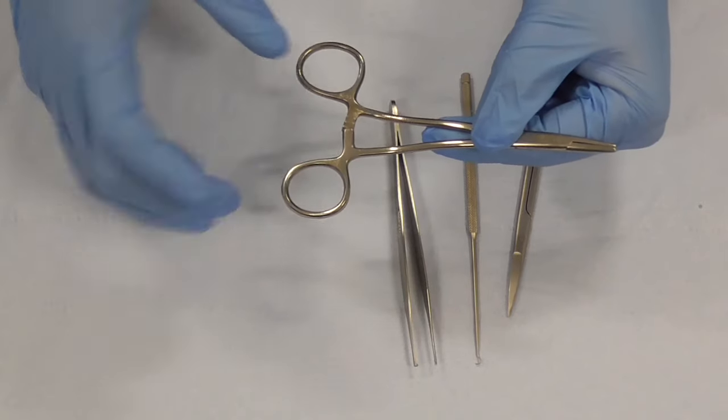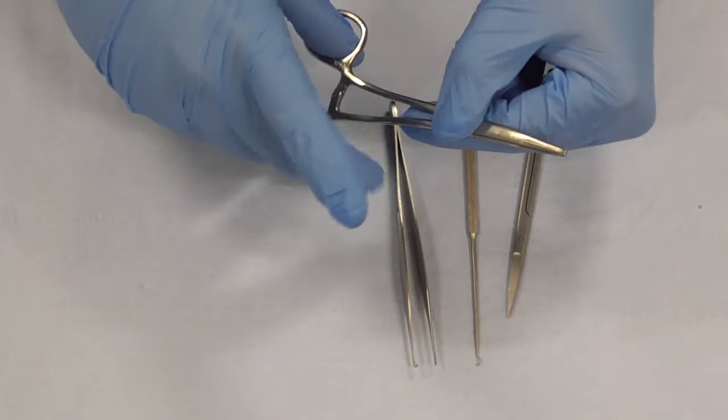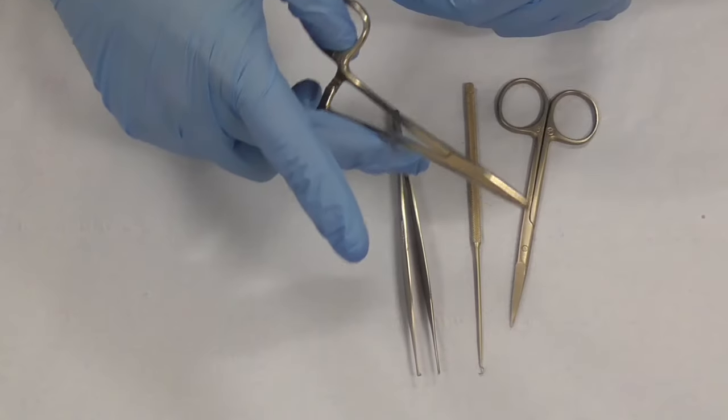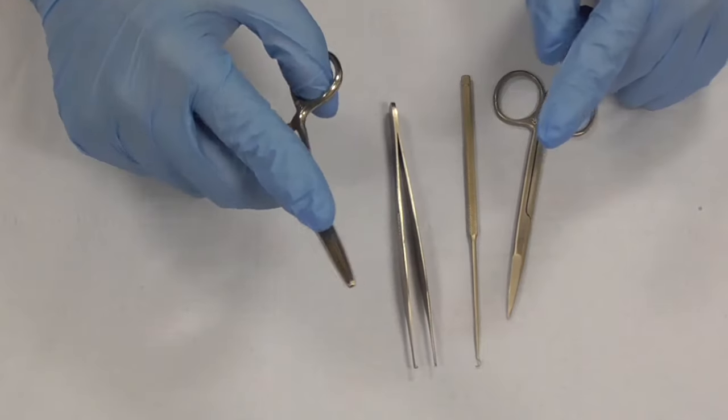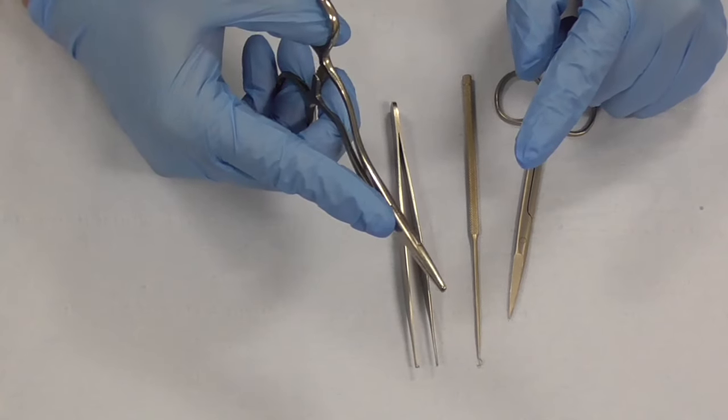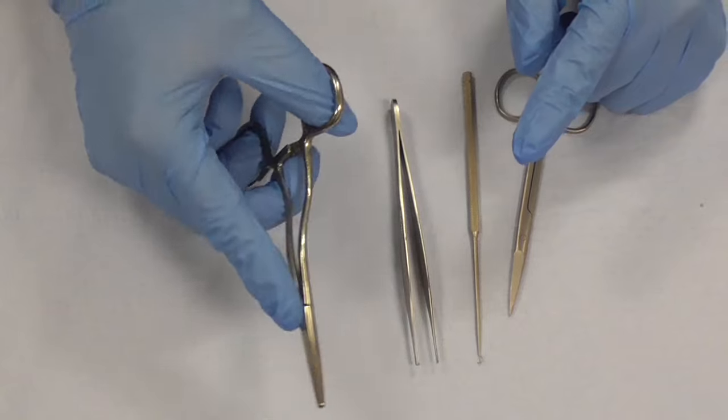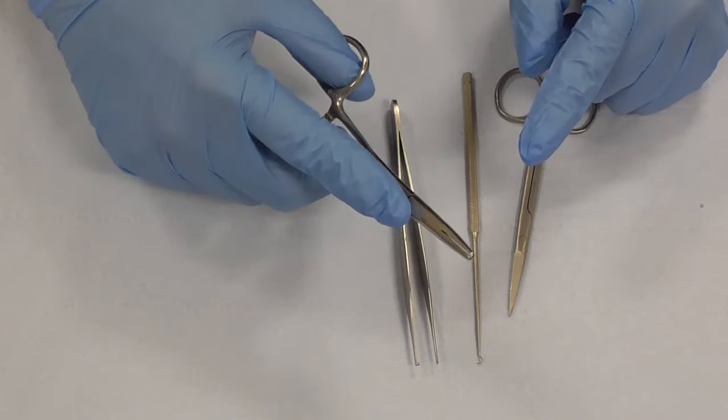So how do you hold it? Thumb and ring finger and then the needle holder rests on your middle finger and the index finger is there to direct it and that gives you the best approach to suturing.